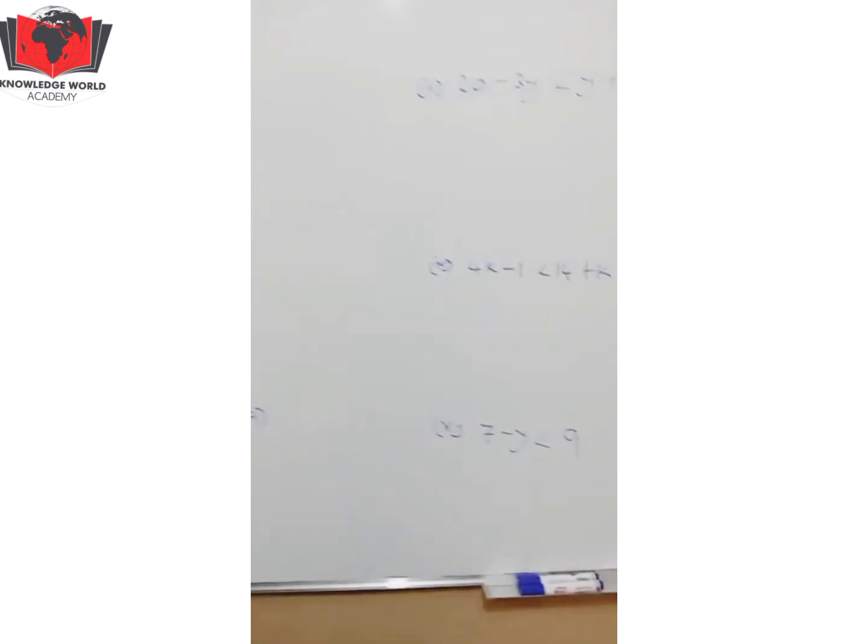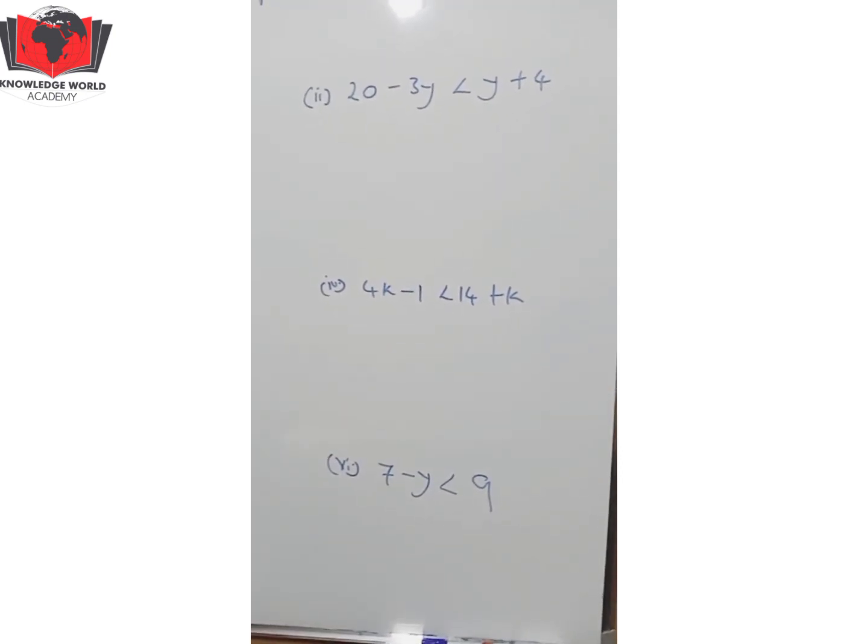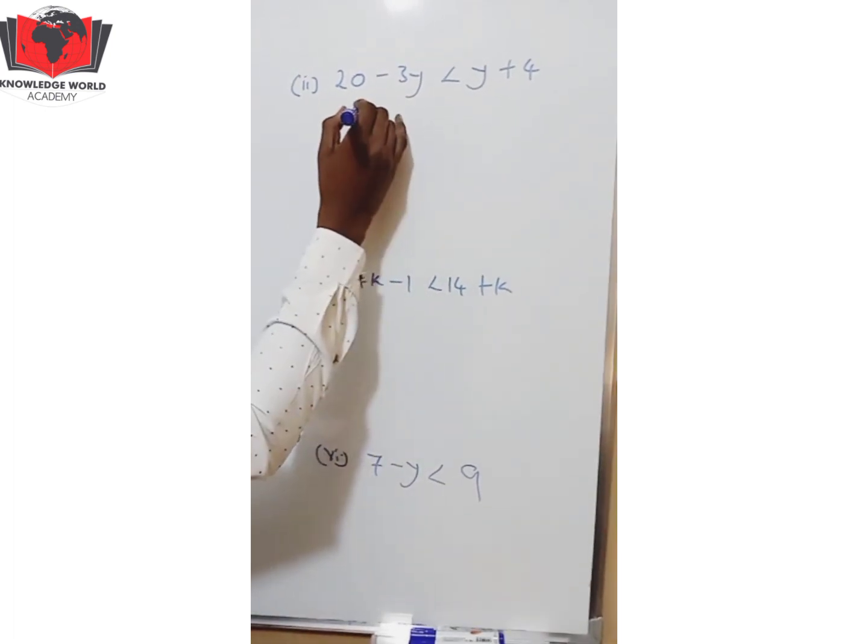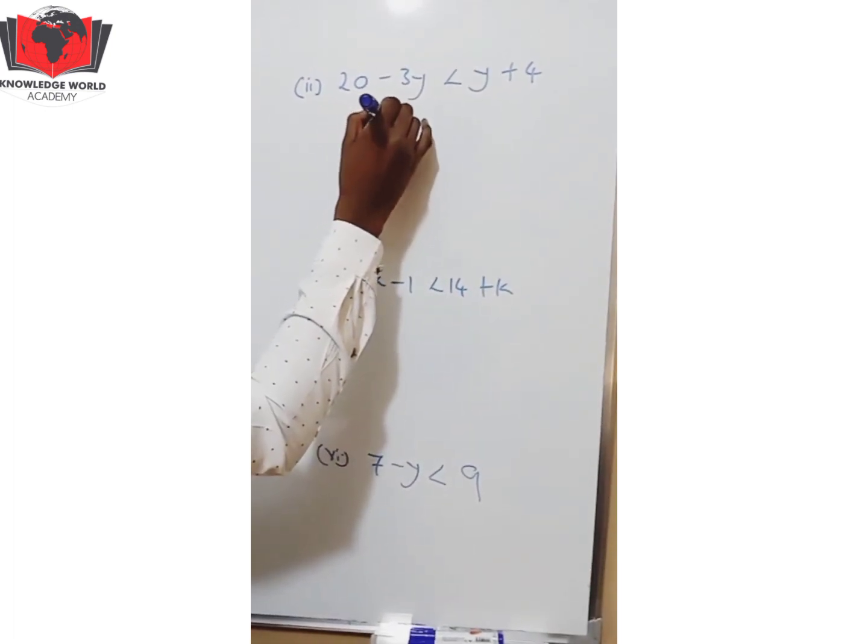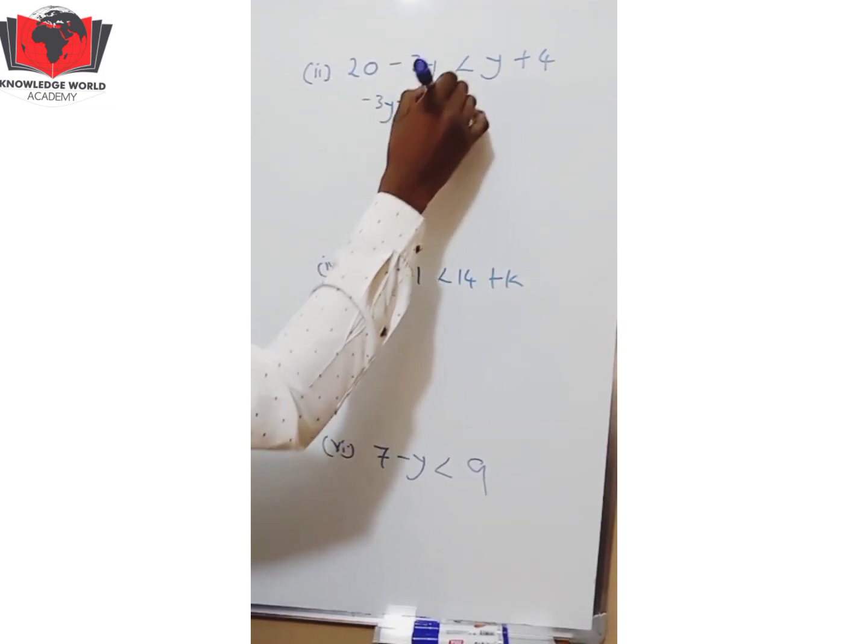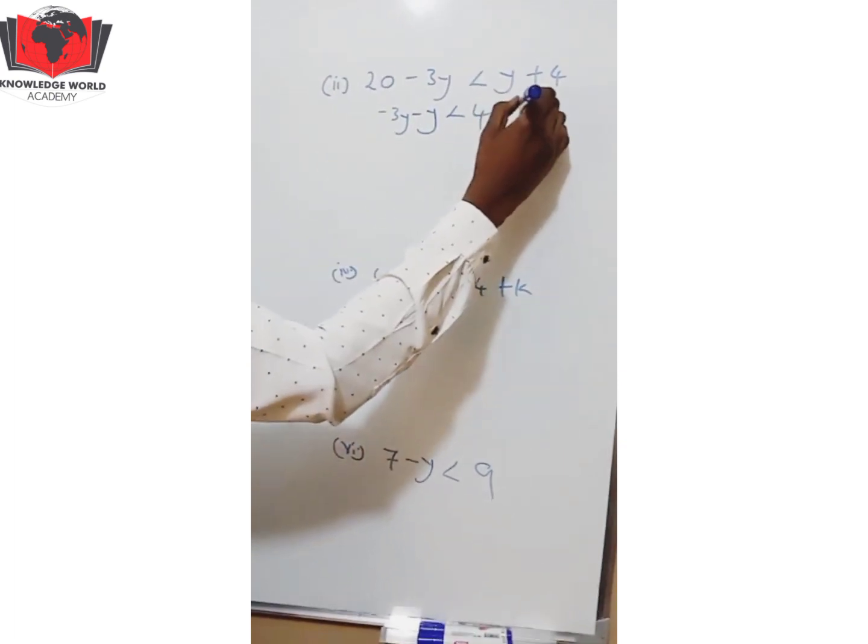Let's look at example 2. 20 - 3y is less than y + 4. Simple. Let's group the like terms. -3y. This is positive y, goes the other side -y. Less. Then you have 4. This is positive 20, goes the side -20.